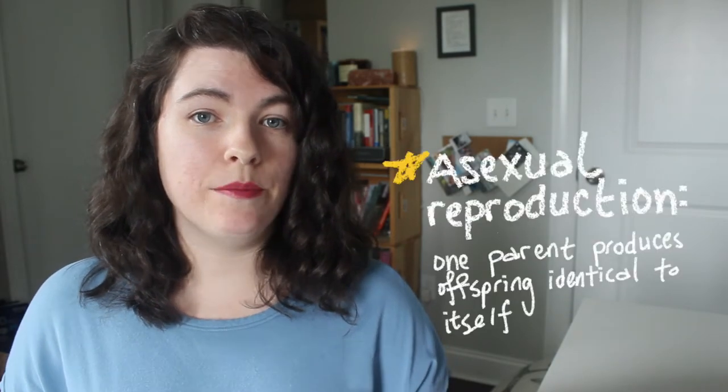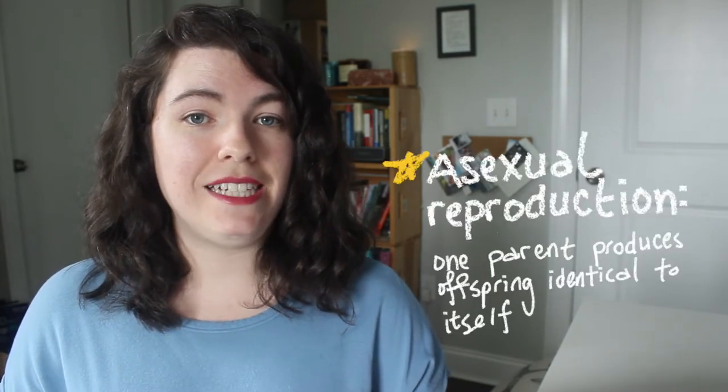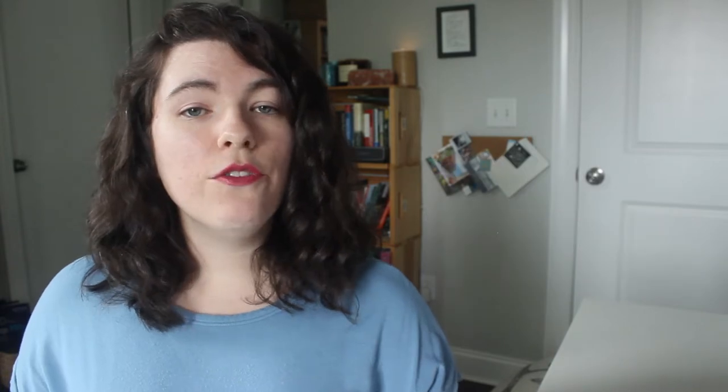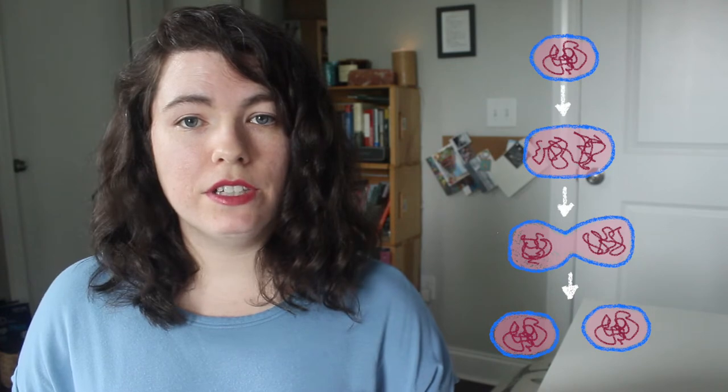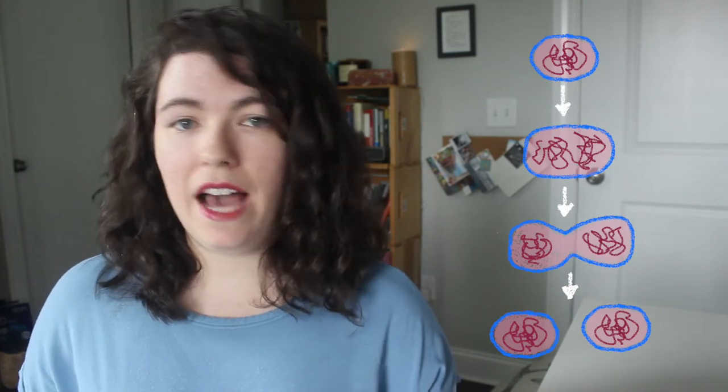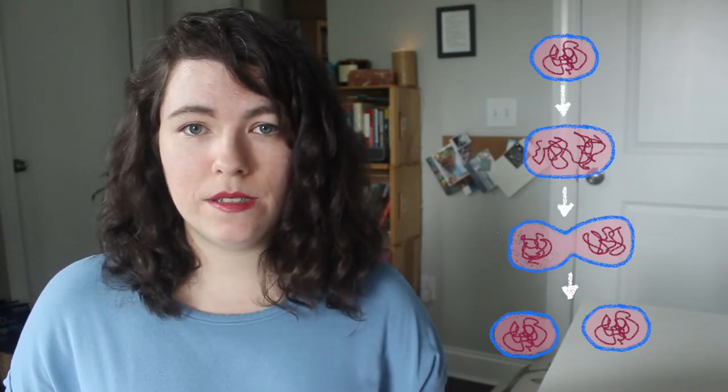In asexual reproduction, the parent organism produces an offspring that is identical to itself. There are a variety of methods of asexual reproduction, including bacterial cells that split themselves in half into two new organisms, plants that grow smaller versions of themselves that can be split off into independent plants, and animals whose body parts, if severed, can grow into a whole new organism.